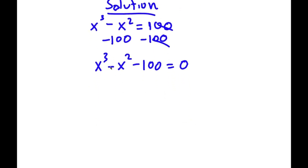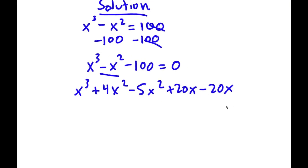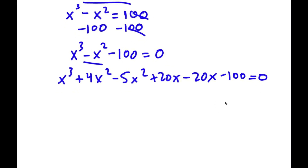Now I can actually rewrite this. So now I have x to the power of 3, and I'm going to rewrite negative x squared as 4x squared minus 5x squared, because 4x squared minus 5x squared is equal to negative x squared. And now I'm also going to add in positive 20x minus 20x, because these two will simply cancel out. And then I have my minus 100 at the end. You'll see why I did all of this in a minute.